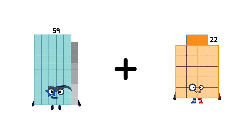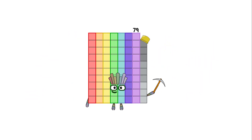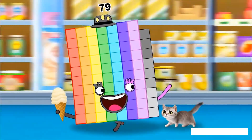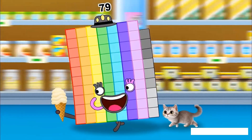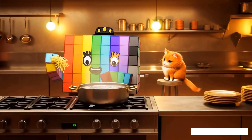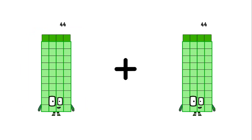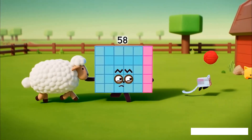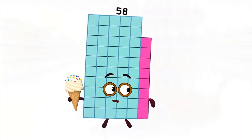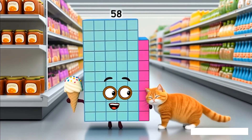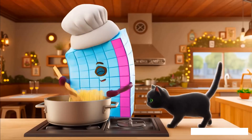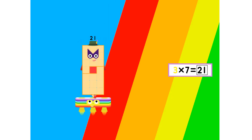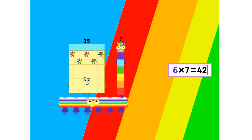29 minus 20 equals 79. 44 minus 14 equals 38. 45 minus 15 equals 38.